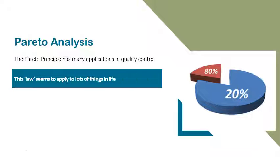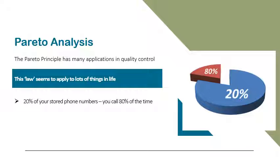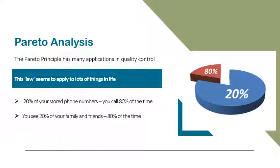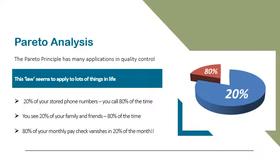This law seems to apply to lots of things in life. 20% of your stored phone numbers you call 80% of the time. You see 20% of your family and friends 80% of the time. 80% of your monthly paycheck vanishes in 20% of the month.